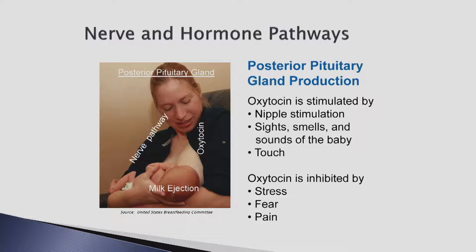Infants placed skin-to-skin early and often will help mothers stimulate oxytocin release. Tense or worried mothers, on the other hand, are more likely to inhibit oxytocin release, resulting in difficulties with letdown.